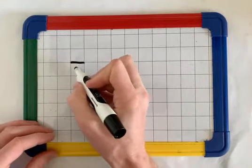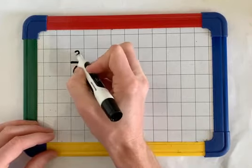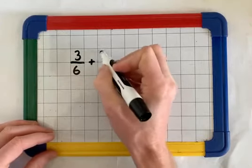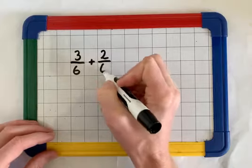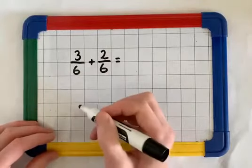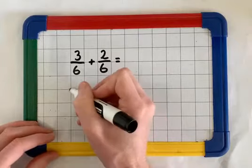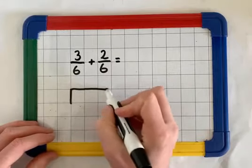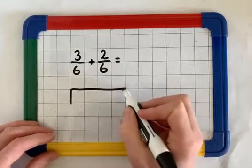Let's have a look at adding up 3 sixths and 2 sixths. Here we have the same denominator, we have sixths. If we look at this on a bar model,